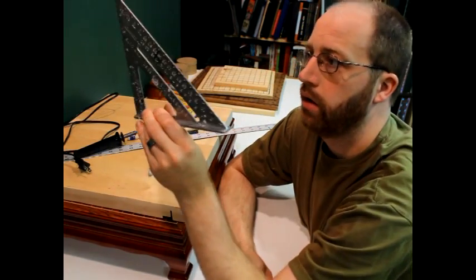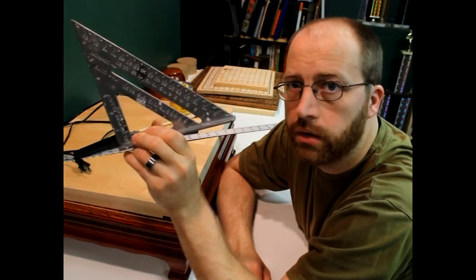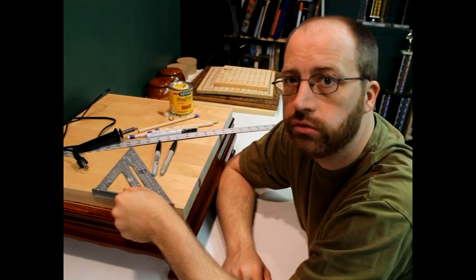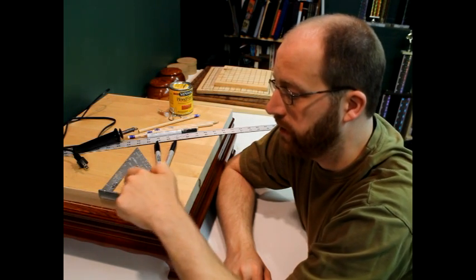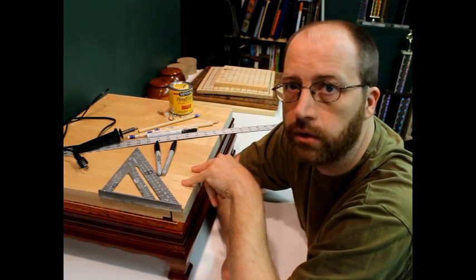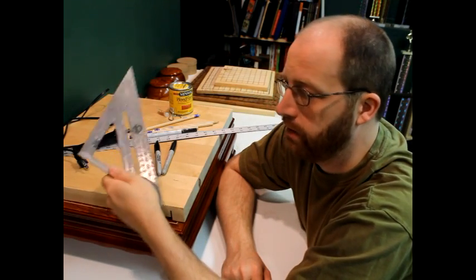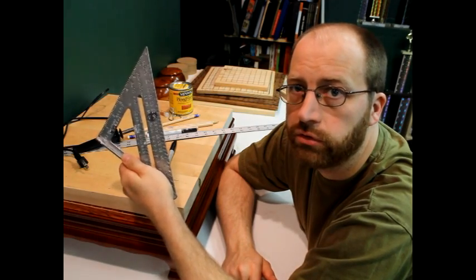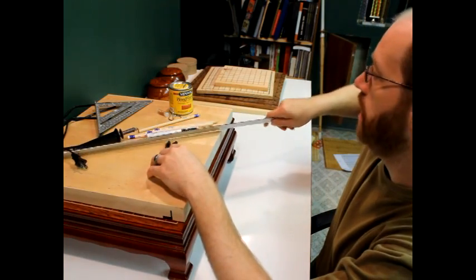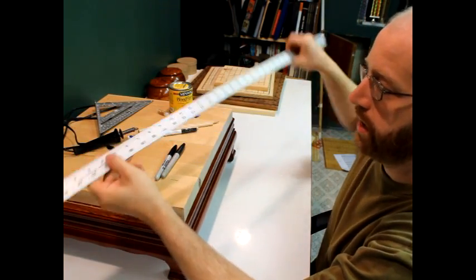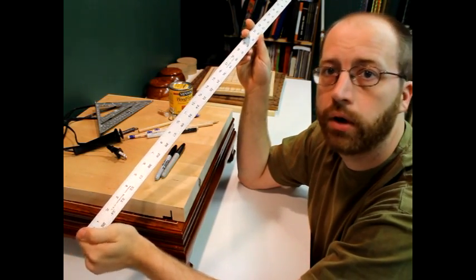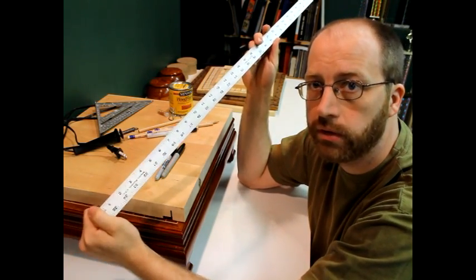You're going to need a square and basically what this does is it's going to keep your lines nice and straight and also it's going to make it easy for you to mark out your lines properly. I say need it, I guess you don't really need it. It's just a tool that's going to make your life easier. But what you do need is some type of ruler. I got this long metal ruler. I also have a shorter wood ruler laying around here somewhere.